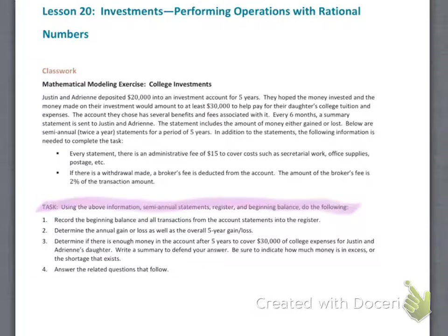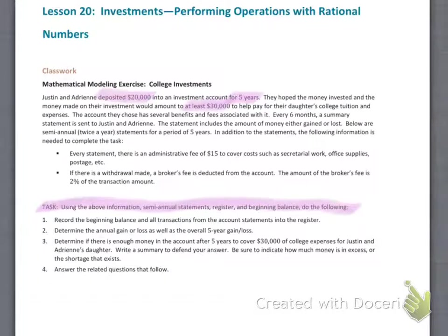They deposited $20,000 and are going to keep it in the account for five years. Their daughter must be about an eighth grader — five years later she'll be going into college. They're trying to have at least $30,000 at the end of those five years, which means they're trying to make a profit of $10,000 on this money — a pretty lofty goal. The account they chose has several benefits and fees associated with it: interest you can earn, and fees you need to pay — some income and some expenses, some withdrawals and some deposits.